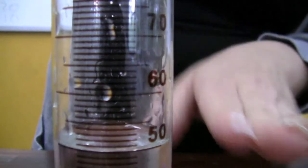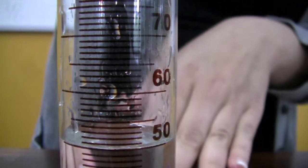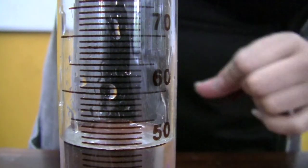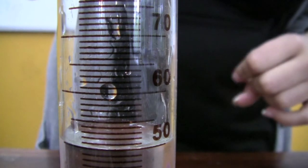So we can see that the meniscus, the dip at the bottom of the solution, is in line with the gradient. And that's how we measure our liquids correctly.